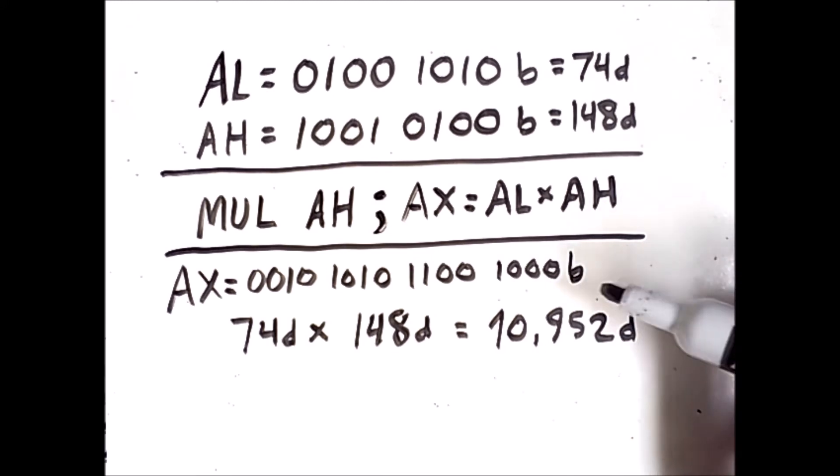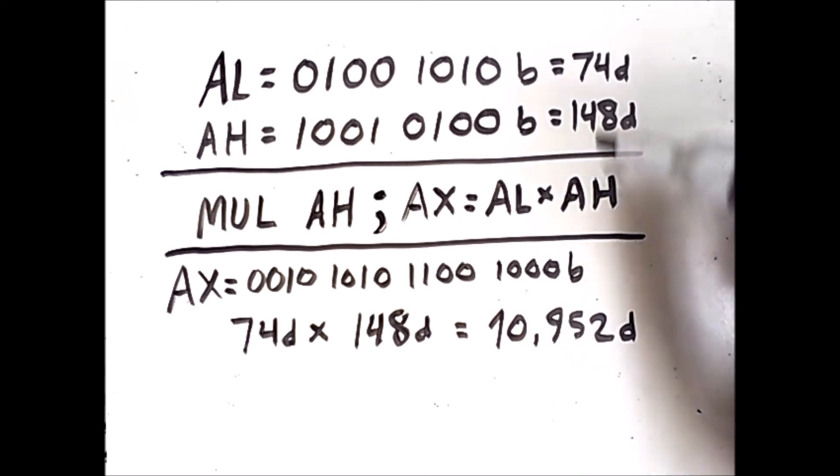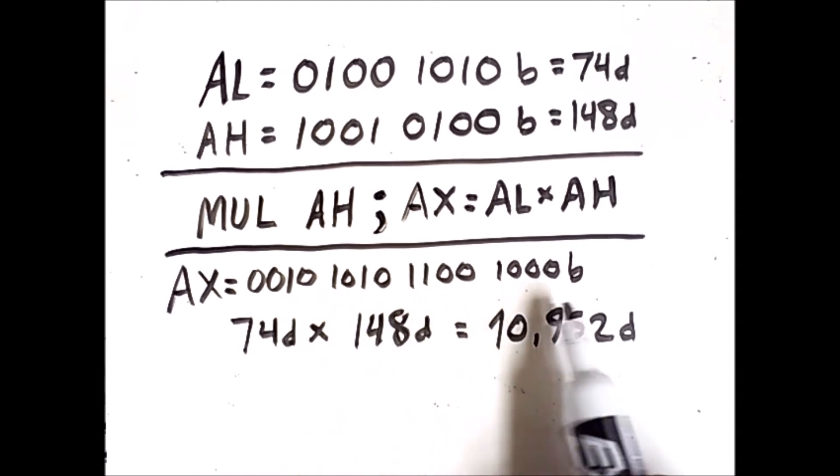Now these binary values are equivalent to these decimal values. AL holds 74. AH holds 148. And when you multiply those together, you do indeed get this result, 10,952, which is what this binary sequence represents.